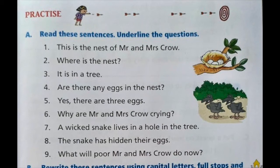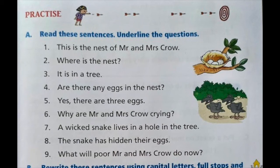Number seven: 'A wicked snake lives in a hole in the tree.' There is a statement here with a full stop — do not underline. Number eight: 'The snake has hidden their eggs.' A statement again, so not a question. Number nine: 'What will poor Mr. and Mrs. Crow do now?' — question mark. So underline number nine.